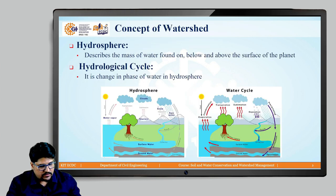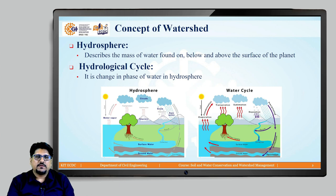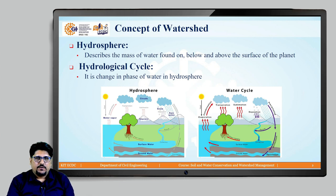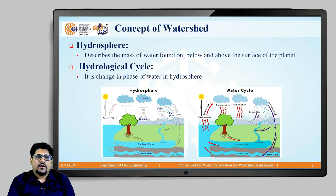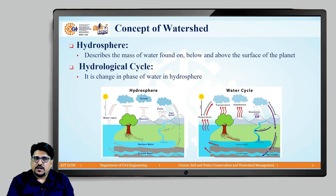Now, what is watershed? As far as this course is considered, we are going to deal with different resources which are comprised within a particular boundary. We will discuss deeply how they get affected by various activities or naturally. Whatever resources we consider will be within a defined boundary, and that particular defined boundary is nothing but a watershed.